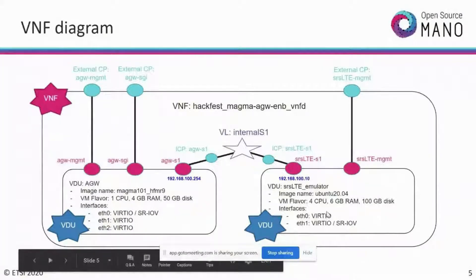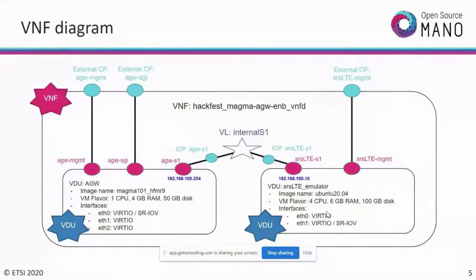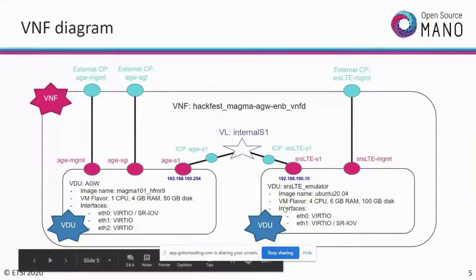For the second VDU, the SRS-LTE emulator, it is built on an Ubuntu 20 raw image. Additional components will be built as part of day-one configurations. The flavor for this VDU is 4 CPU, 60 GB RAM, with high storage requirements. You specify all this as input in your descriptor.